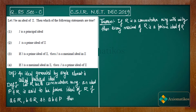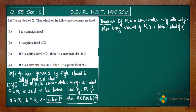An ideal P, not equal to the ring R, is said to be a prime ideal of R if for a belonging to R and b belonging to R such that ab belongs to P, it implies that a belongs to P or b belongs to P. That is the definition of a prime ideal: if two elements' product lies in P, then at least one of them must lie in P.